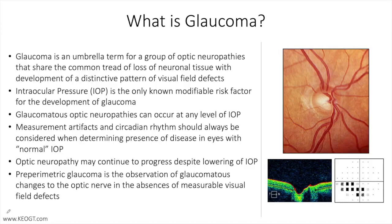Glaucoma is a general or umbrella term that we use to cover a group of diseases that share the common clinical picture of characteristic optic nerve cupping with distinctive patterns of visual field loss. The optic nerve cupping is an expansion of the internal optic nerve head void that occurs secondary to the loss of ganglion cell axons that leave the eye through the opening in the sclera in the back of the eye.